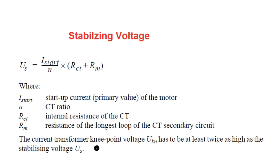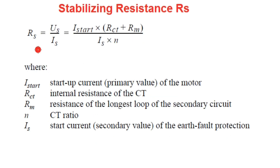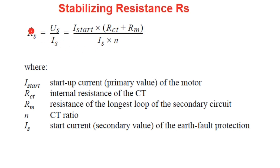We must check whether the knee point voltage Ukn is greater than two times the stabilizing voltage Us, to verify CT requirement fulfillment. Once Us is known, the stabilizing resistance is calculated as RS = Us / Is, where Is is the relay setting current — the start current of the earth fault protection. So RS = (Istart × (RCT + Rm)) / (Is × n).